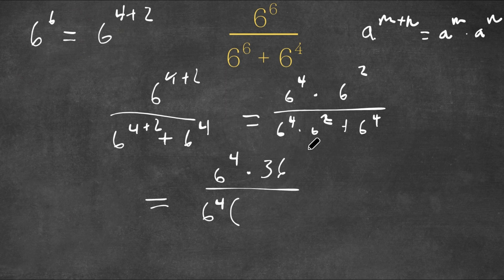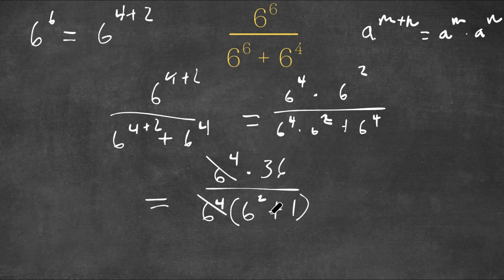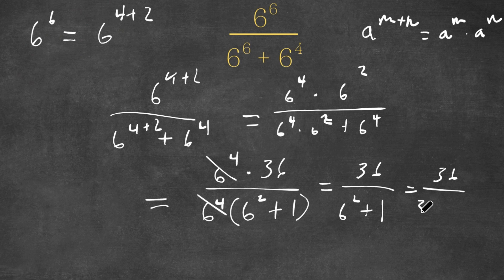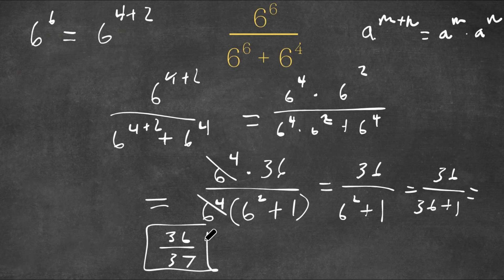Sorry, I meant 6 squared. So we have 6 squared plus 1 — since 6 to the power of 4 divided by 6 to the power of 4 is 1. These two 6 to the power of 4s cancel out, so we are simply left with 36 over 6 squared plus 1. That equals 36 over 36 plus 1, which is equal to 36 over 37. So this is our answer.